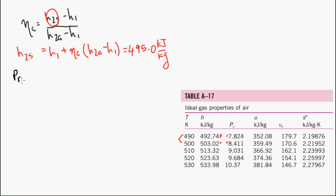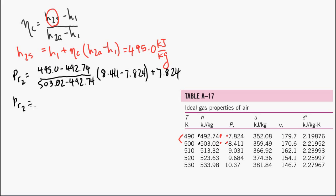So we have PR2 equals 495 subtract 492.74, divided by 503.02 subtract 492.74. That's this value and this value. We multiply it by the difference of the relative pressures, plus 7.824. Then we get PR2 is equal to 7.951.